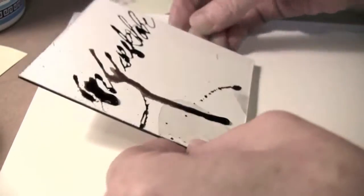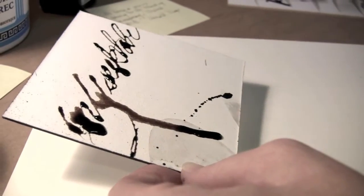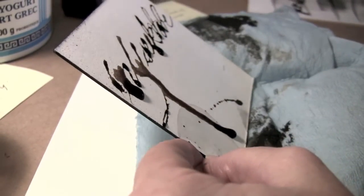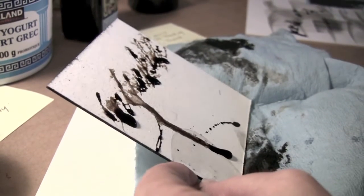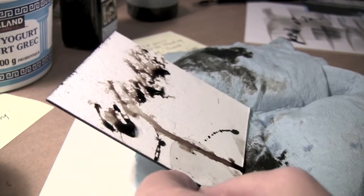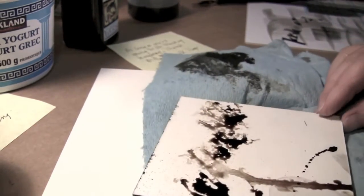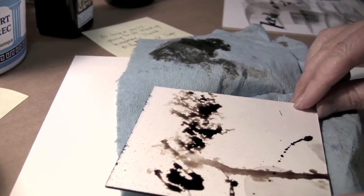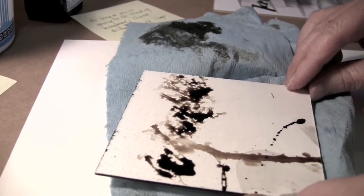Here I'm trying to create some different effects by tapping the board and getting some drips happening. I'm spritzing it with water to create some effects with the ink where it's light and dark, just trying to get some contrast to that kind of uniform ink color.